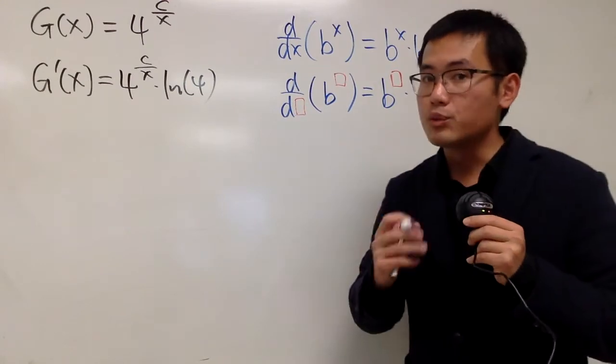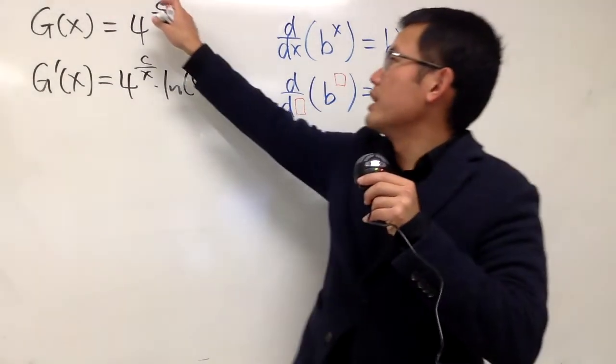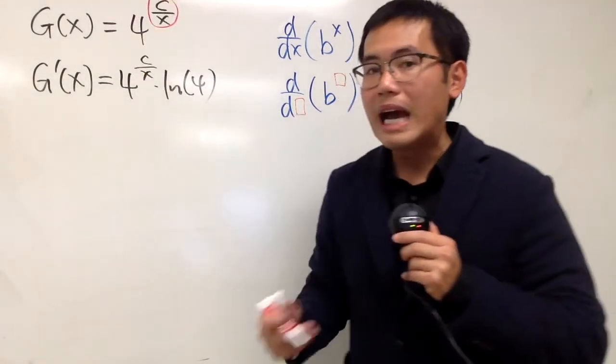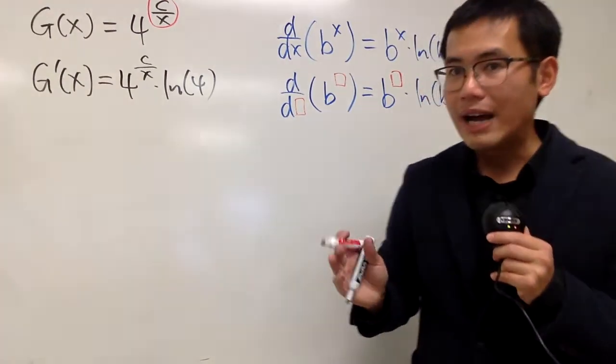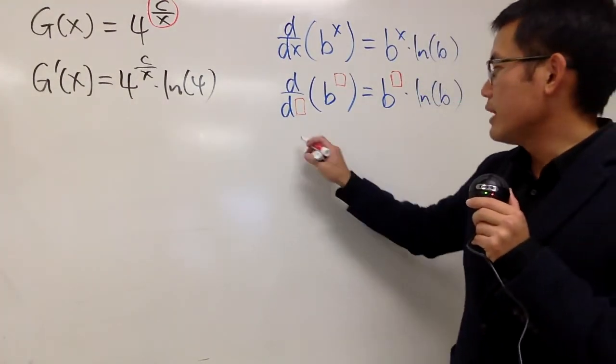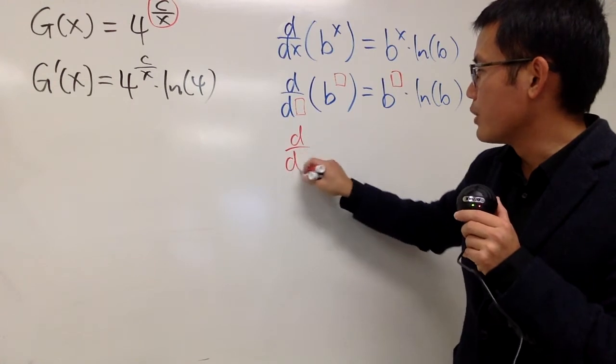But we are not done yet because we have to use the chain rule. Because right here, as we can see, here we have c over x. We have to differentiate that. So now, perhaps I'll do this on the side just to make it super clear for you guys.